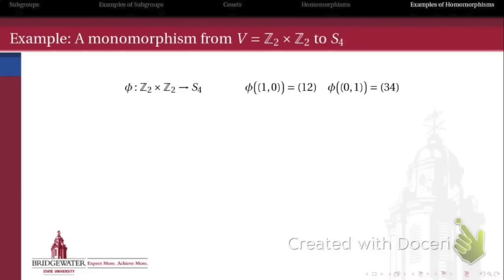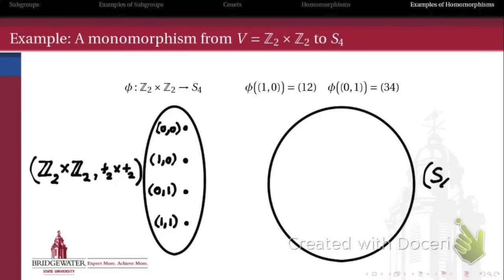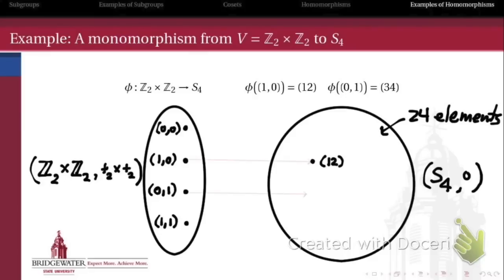Here's another example. Let's take the group Z2 × Z2, which we call the Klein 4 group. Here's an example of a monomorphism from that group into the symmetric group S4 on 4 symbols. It takes the element (1,0) and sends it to the transposition (1 2), and it takes (0,1) and sends it to the transposition (3 4). The first thing we need to ask is: in what sense does this actually define a homomorphism? Because I've only said what it does to two of the four elements of the Klein 4 group. Is this enough information to define a homomorphism into S4?